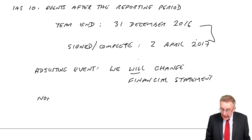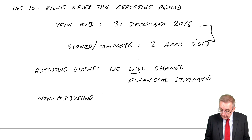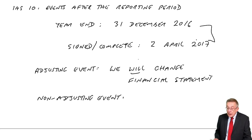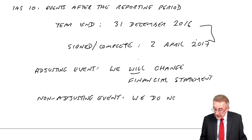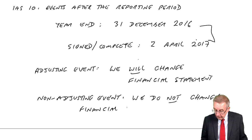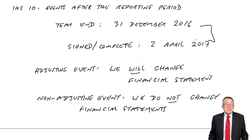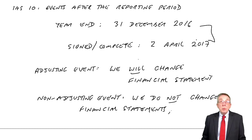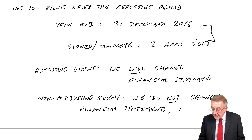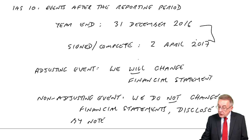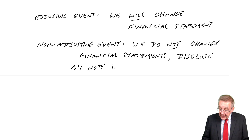However, the other type is a non-adjusting event. In a non-adjusting event, we do not change the financial statements. But if the amount involved is what we call material — if it's big — then we will attach a note to the statements explaining. We disclose by note. That's the expression: attach a little note to the financial statements. Disclose by note, if material.